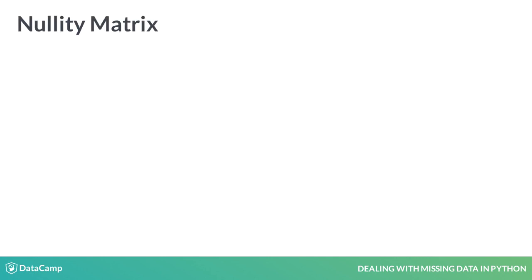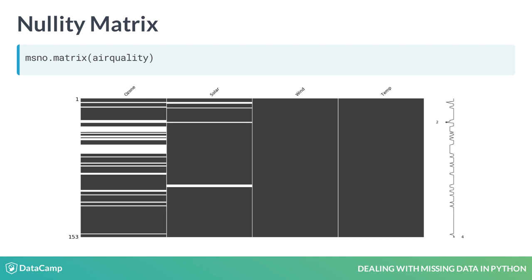Another very important graphical analysis is to visualize the locations of missing values in the dataset, which allows us to quickly analyze the patterns in missing values. We can create such a plot using the function msno.matrix. The plot describes the nullity in the dataset and appears blank wherever there are missing values.